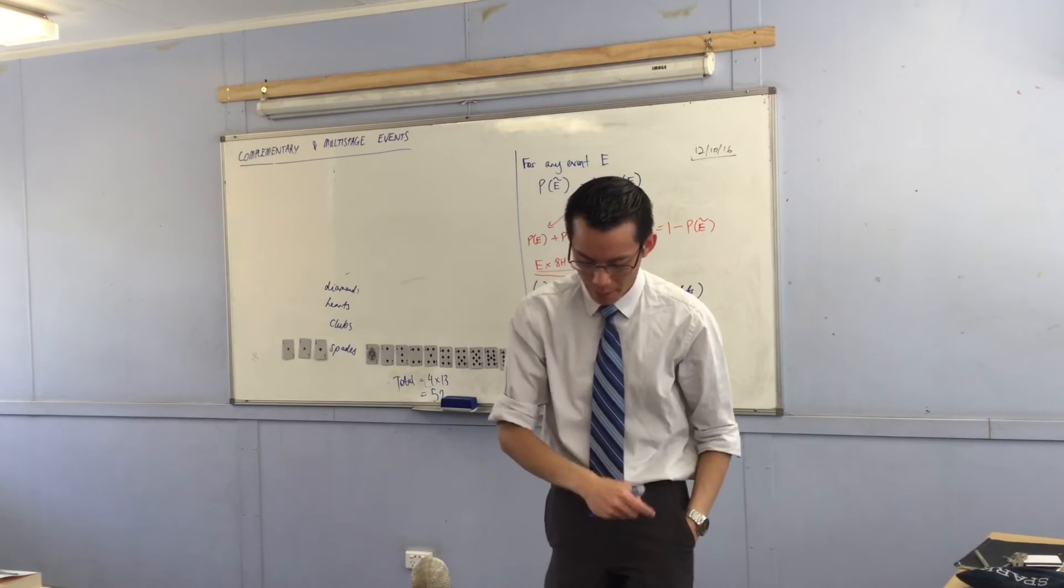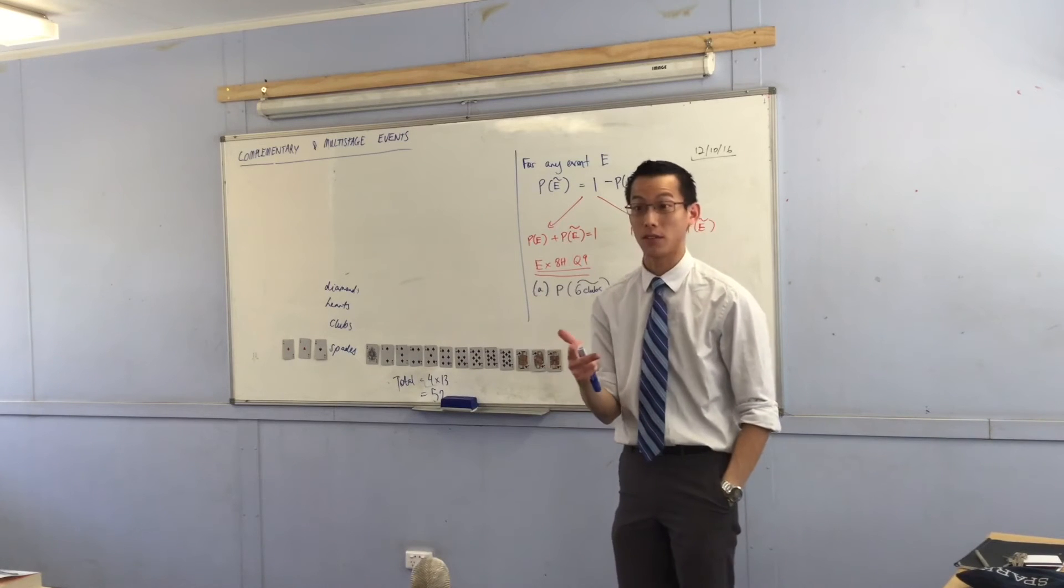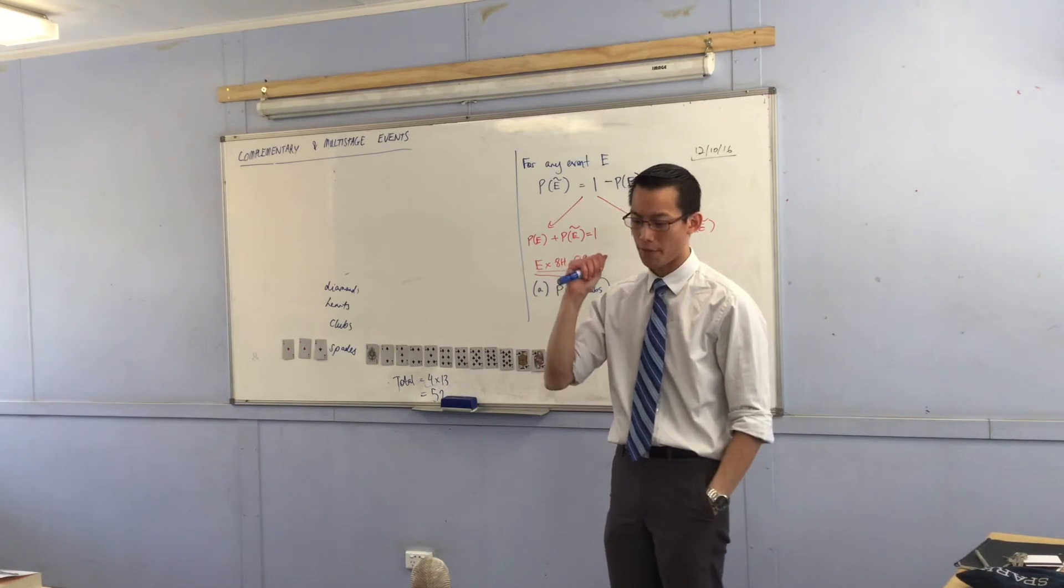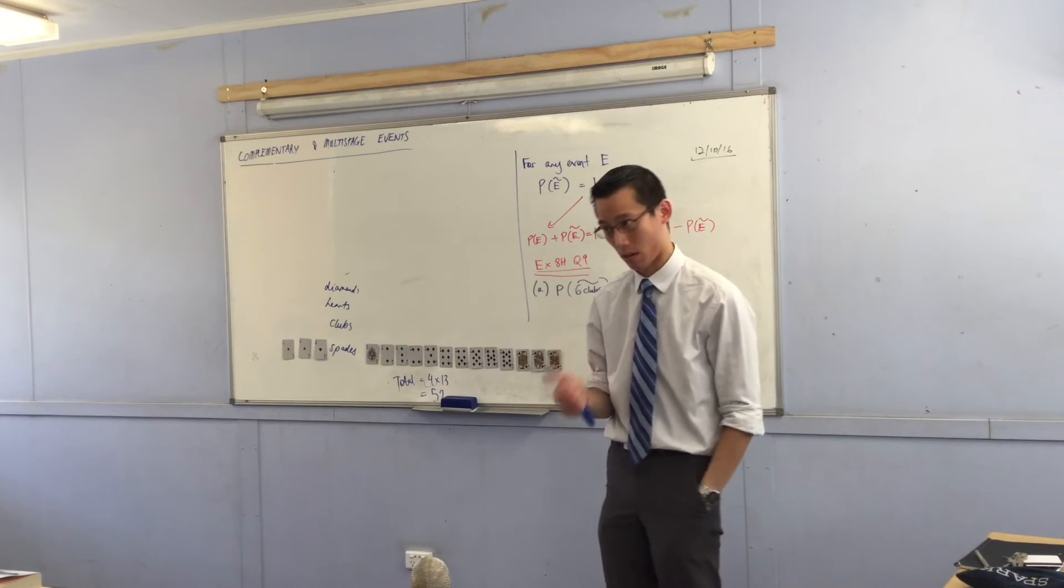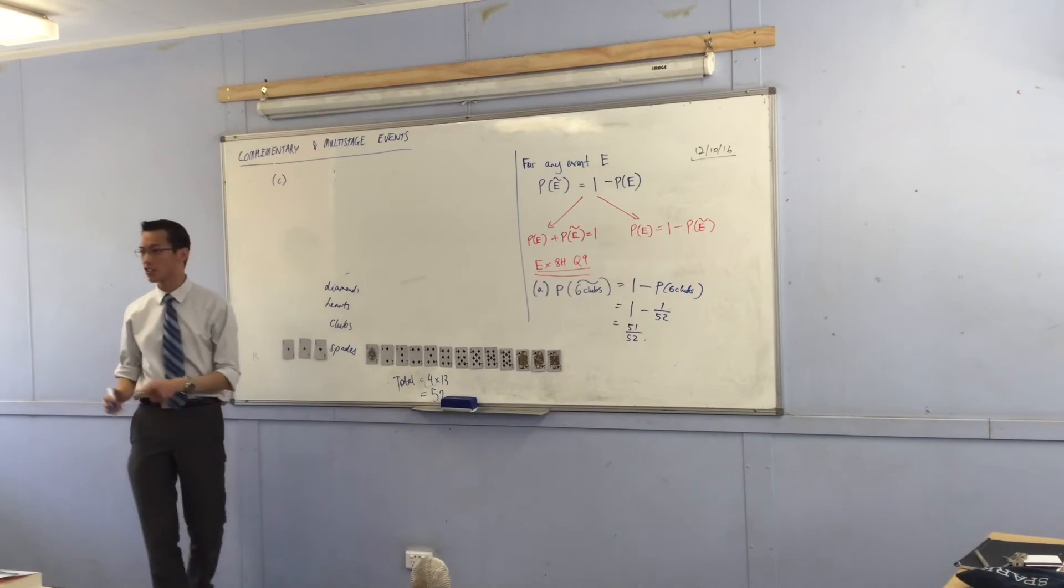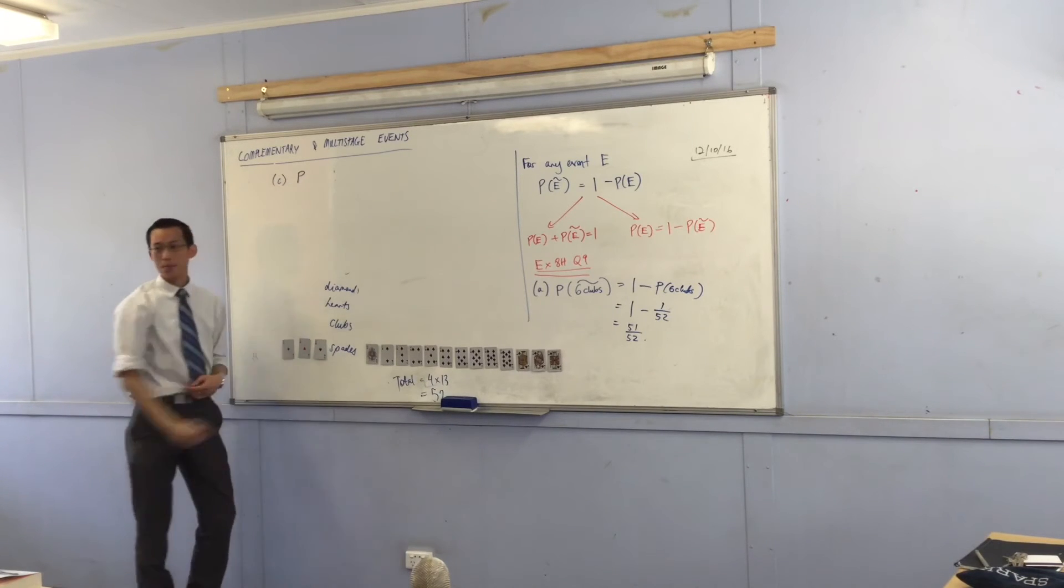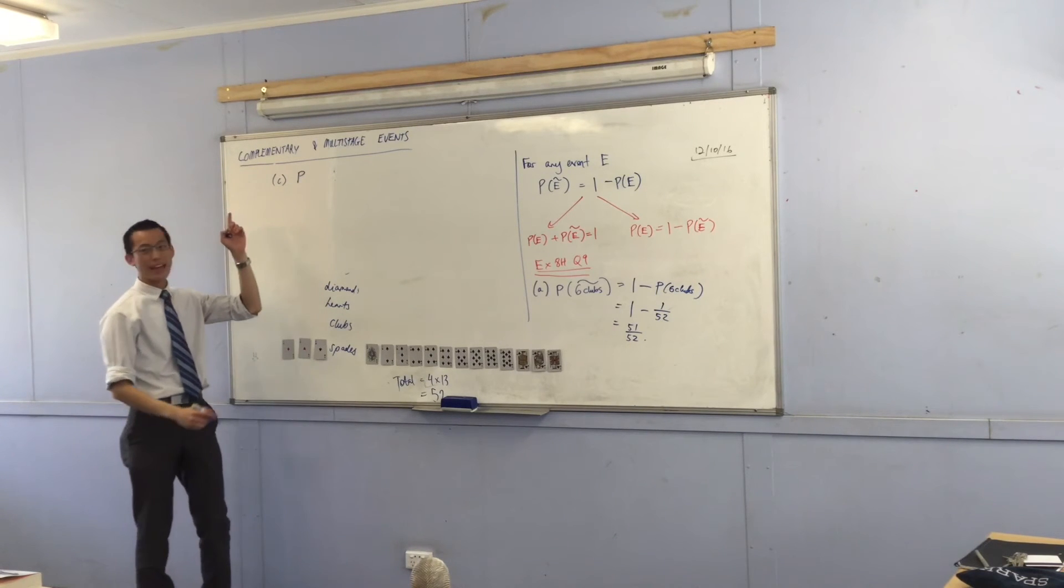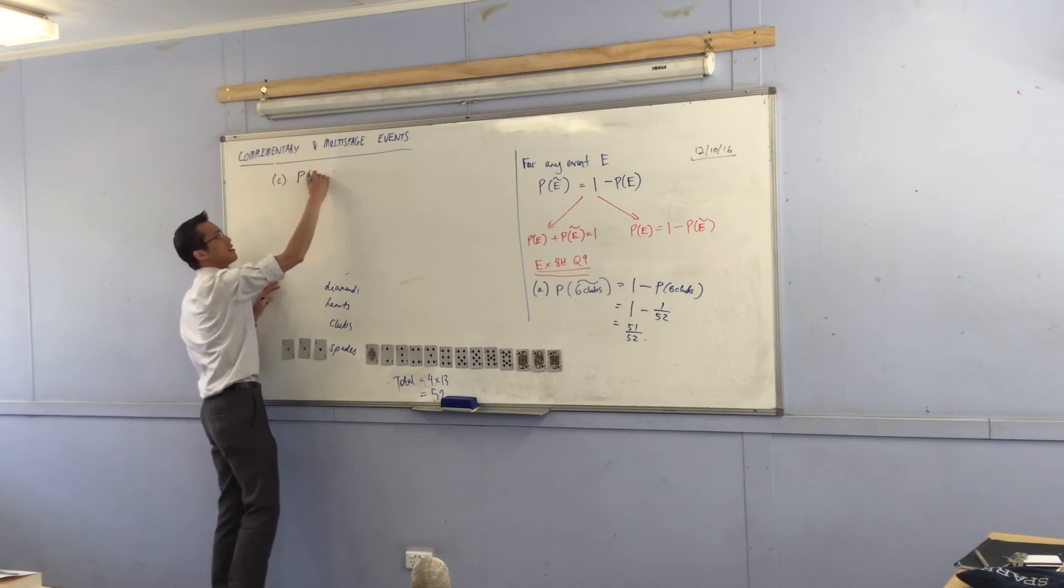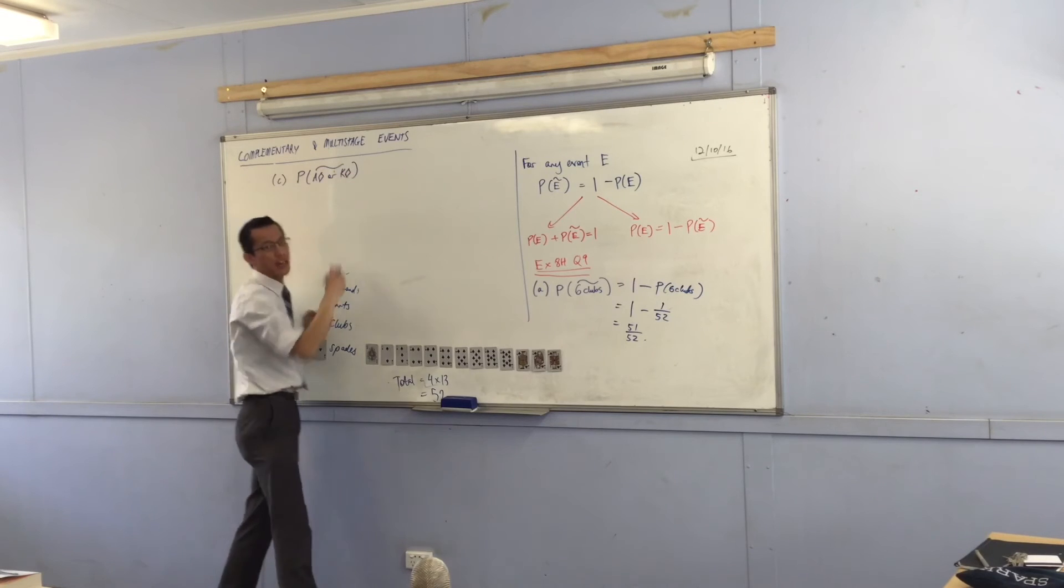Now, keep that in mind as you look at part C. It says, what's the probability of not getting an ace of diamonds or a king of diamonds? This is part C. So, please pay attention to the way that I write this.